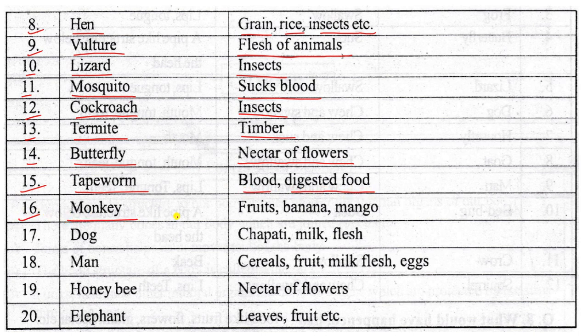Number sixteen: monkey — fruits, banana, mango — herbivorous.